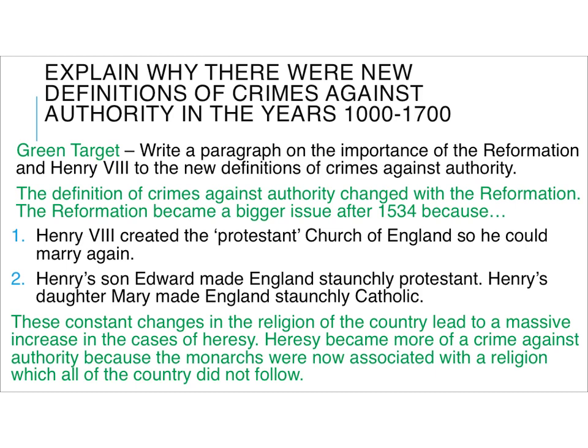Okay, so the green target for the explain why question is about the Reformation. What I found is that people started to write quite a bit about religion, but they didn't necessarily write about it in the form of the Reformation. So again, I've got my sentence starting in green at the top here: the definitions of crimes against authority changed during the Reformation, and it became a bigger issue. I've got my date in there from a previous target — 1534 — and then I've mentioned about Henry, and his son and daughter, and then I've linked it back to the question.